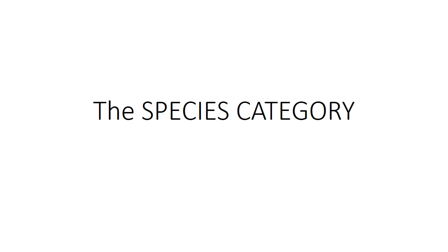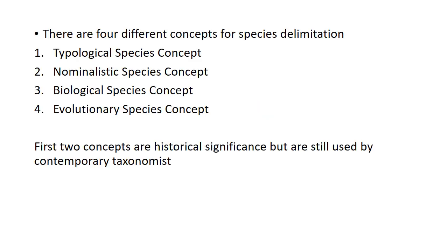Today the topic of our discussion is the species category. There are four different concepts for species delimitation: typological species concept, nominalistic species concept, biological species concept, and evolutionary species concept. The importance of these species concepts is that we are trying to define the criteria on the basis of which we have to define a species.